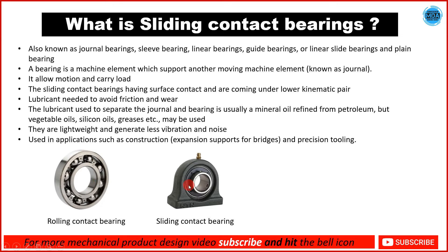In rolling contact bearings, we use rollers in terms of ball bearings and cylindrical rollers. Ball bearings have point contact and roller bearings have line contact. In contrast, sliding contact bearings have surface contact. The outer part is the bearing housing, and the inner part is the bush bearing — also called journal bearing, sleeve bearing, linear bearing, guide bearing, or plane bearing.